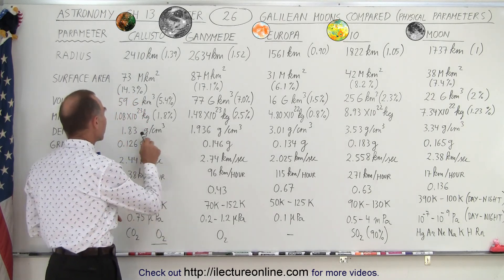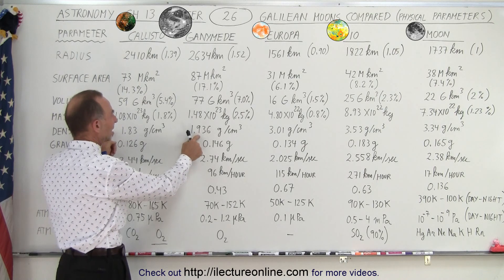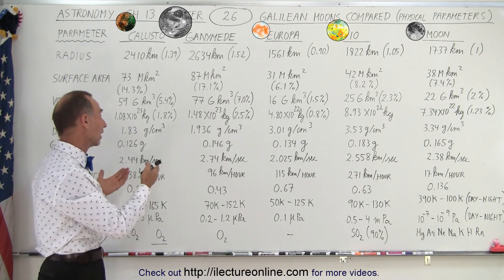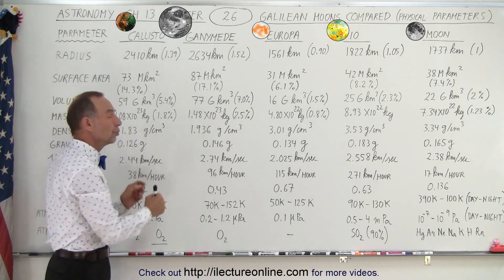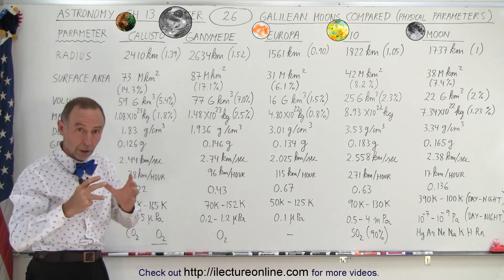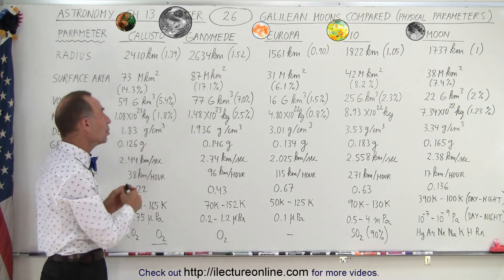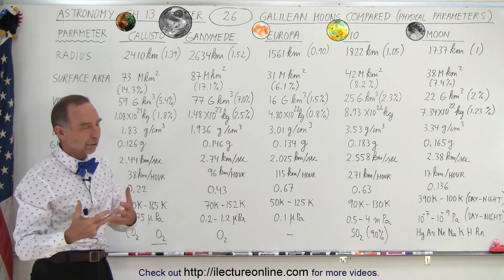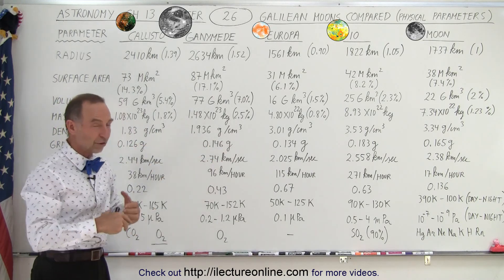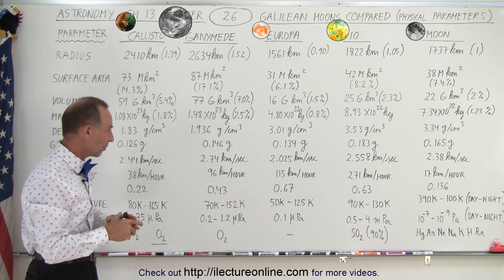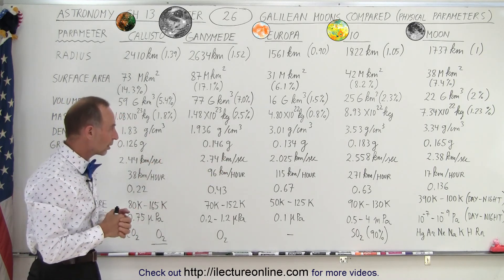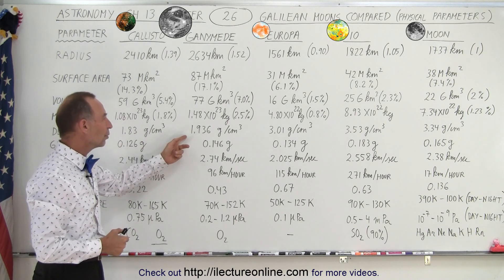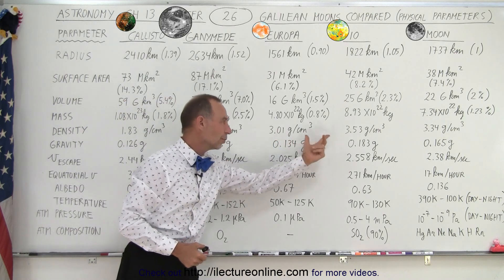Now when we come to Ganymede and Callisto, notice their densities. They're considerably less than the typical density for rock. Density for rock is about 2.6. So when we look at less than two, that means that those two moons have a considerable amount of ice, ice water or ice from water locked in the moon. And so we expect to see a lot of ice within those moons. Now that's kind of typical for structures far away into the solar system. There's a lot of ice in the far reaches of the solar system, especially when we deal with the comets coming from the Oort cloud and the Kuiper Belt. So it's not unusual to see that in these moons, but notice it is quite different from the two inner moons, the two inner Galilean moons.